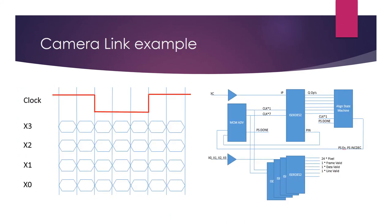A simple Camera Link decoding example: Camera Link sends several serialised streams plus a clock. Within the FPGA you use ISERDES, clock modules, and a simple state machine to adjust the clock phase until you align with the expected lock pattern. When you see the lock pattern — '1 1 0 0 0 1 1' — on the clock receiver, you know it's been correctly received. Links to the implementing code are provided at the back of the slide deck.